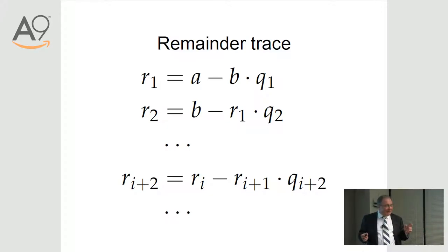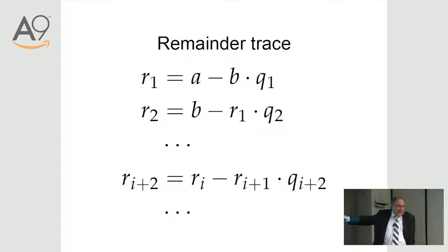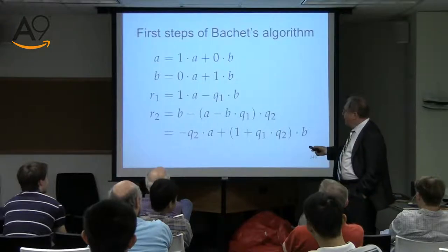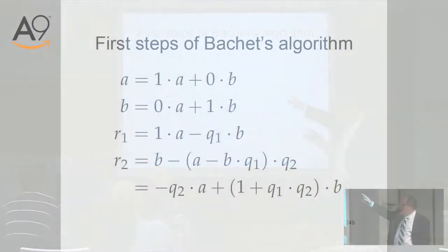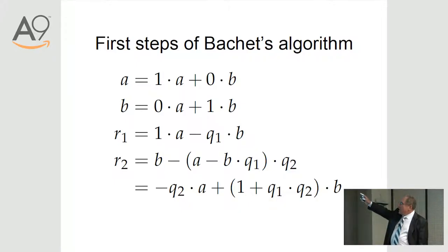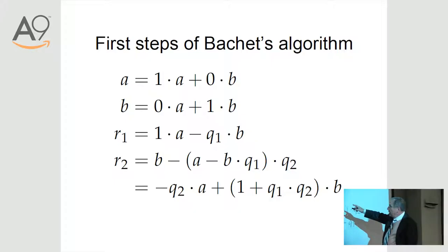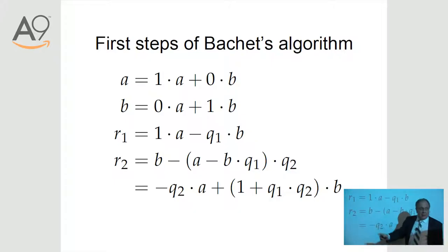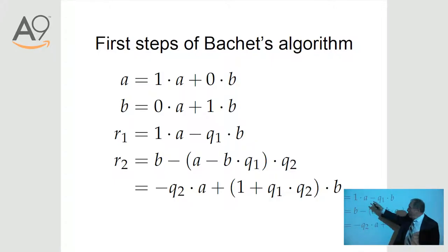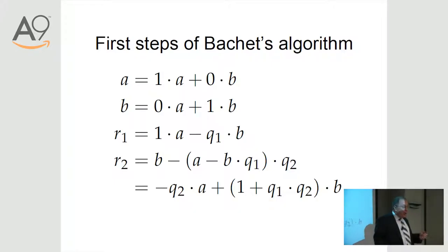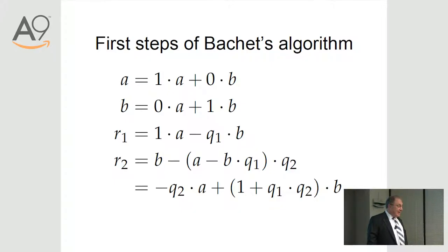Of course you don't see why it's trivial. Let me show you. That's the key. So everybody follows up to here? It's nothing to follow — it's trivial. First steps. We wrote these things, and then we observed that A equals 1A + 0B, B equals 0A + 1B. Then R sub 1 is A with coefficient 1 minus Q1 times B. So we successfully managed to do the first remainder as a linear combination.